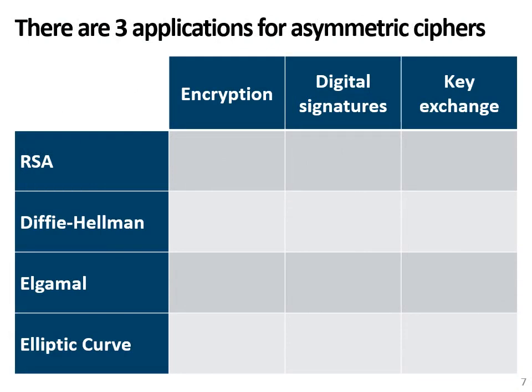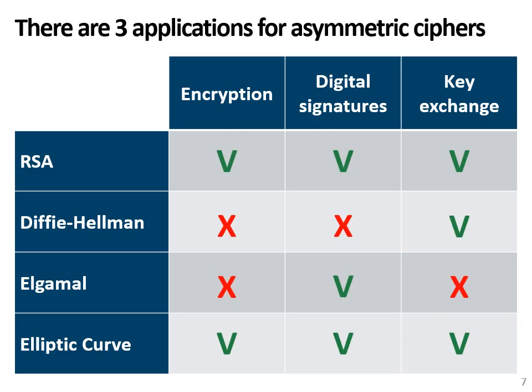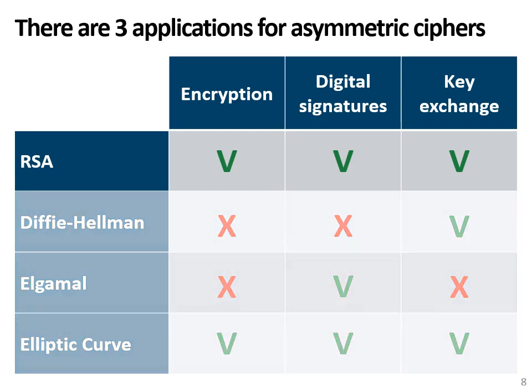Asymmetric ciphers have three important applications. I already showed you how to perform encryption and digital signatures or authentication with these ciphers. Another important application is key exchange, where asymmetric ciphers are used to securely exchange secret keys for symmetric encryption. Some ciphers are very flexible, like RSA and elliptic curves, which can be used to provide all three applications, while others focus on a single application. For example, Diffie-Hellman is used for key exchange and Elgamal encryption for digital signatures. In this video lecture, I will talk mainly about RSA, and in future video lectures on key exchange I will also talk about other approaches like Diffie-Hellman.